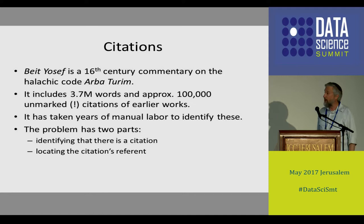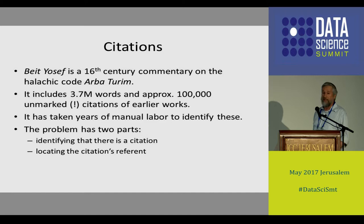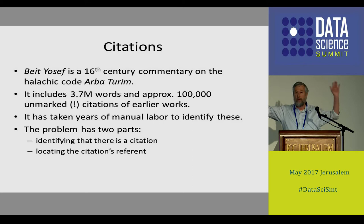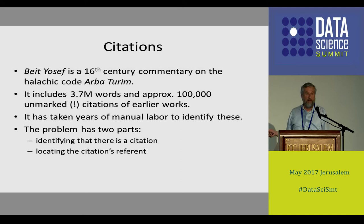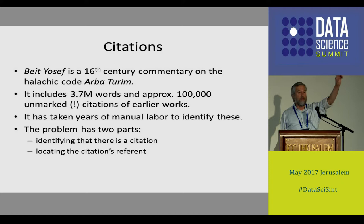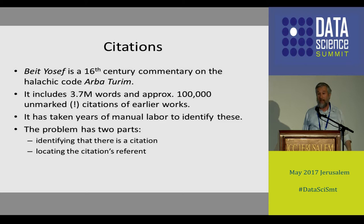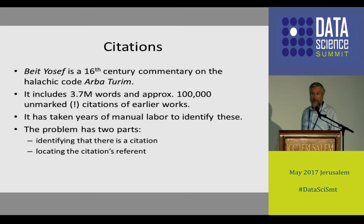Moving on to citations — the Beit Yosef is a 16th-century commentary with 3.7 million words and a hundred thousand unmarked citations. An unmarked citation means the author says something like 'the Rambam said something like that' with no indication of where. Somebody spent years manually identifying every one of these references, so we have training data. The problem has two parts: first, detect that there is a reference at a given location; second, find where that reference actually came from. The first problem is completely solved; the second we're still working on.